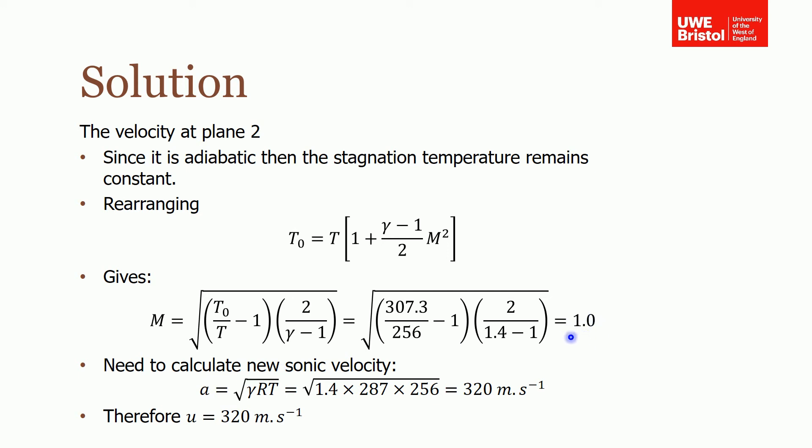But that gives us the Mach number, not the actual velocity. We need to multiply the Mach number by the sonic velocity to get the actual velocity. We can't use the sonic velocity we found previously.